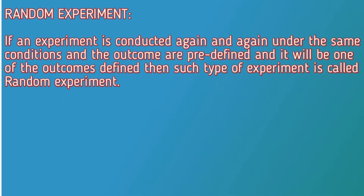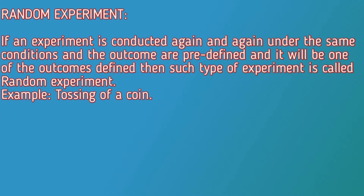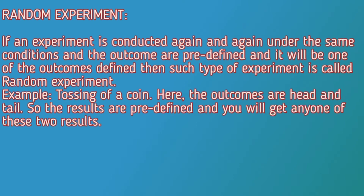If an experiment is conducted again and again under the same conditions and the outcomes are predefined, and the result will be one of those defined outcomes, then such an experiment is called a random experiment. For example, tossing of a coin — here the outcomes are head and tail, so results are predefined and you will get any one of these two results.